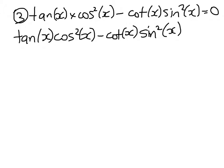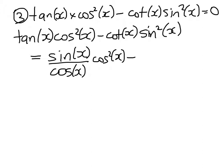Right, so there's that and that equals. Now let's just pop in the definitions. So sin(x) over cos squared(x) minus cos(x) over sin(x) times sin squared(x).